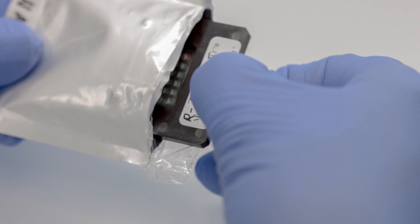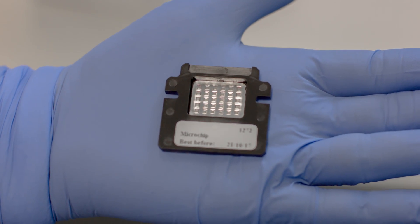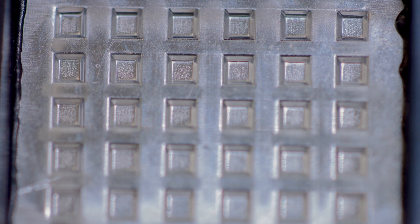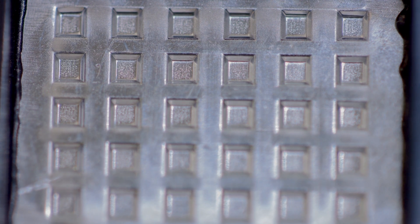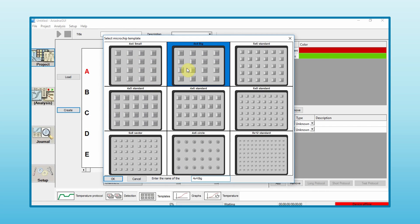The core of the instrument is the microchip technology. A typical microchip contains 30 micro-reactors. Other formats have a different number of micro-reactors, like 24 and 48.